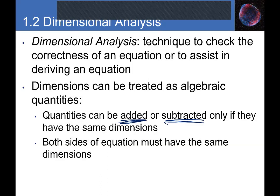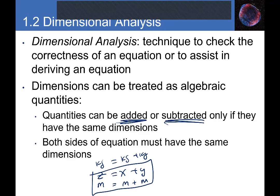When checking equations with dimensional analysis, all terms being added or subtracted must share the same units. For example, if z = x + y and z is in meters, then x and y must also be in meters. You cannot add 10 meters and 20 centimeters directly — you must first convert: 10 meters + 0.2 meters = 10.2 meters.